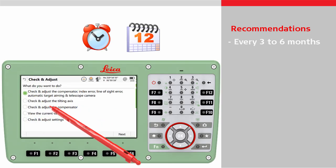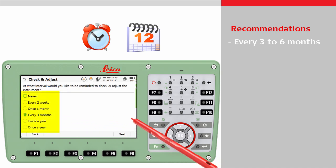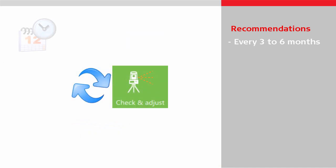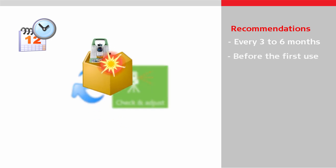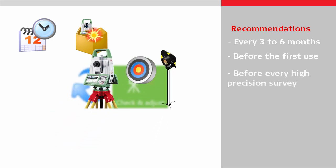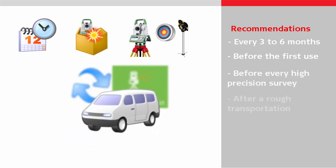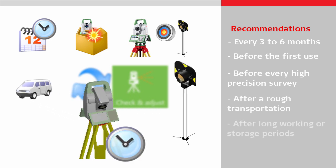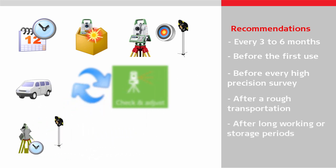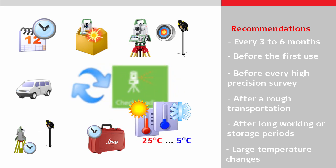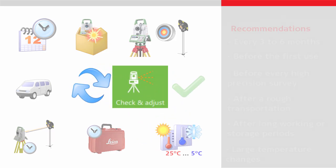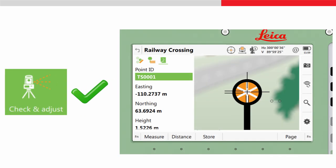A reminder can be set within the check and adjust tool to inform the user accordingly. In addition, the calibration routines should be executed before the first use, before every high precision survey, after rough or long transportation, after long working periods, after long storage periods, and if the temperature difference between the current environment and the temperature at the last calibration is more than 20 degrees Celsius. A proper calibration of the instrument enables the highest precision and reliability of your measurement tasks.